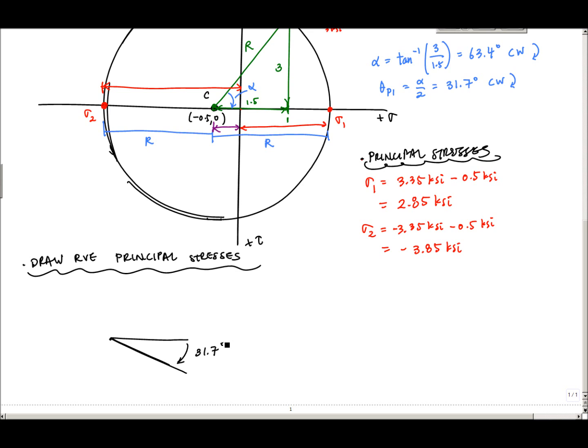And then now to draw my representative volume element, I draw a line perpendicular to this 31.7 degree line, and then I complete the square right here. This, I find, is the best way to draw my representative volume element without getting confused.